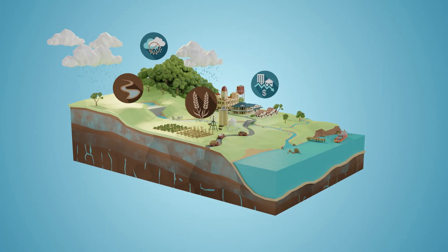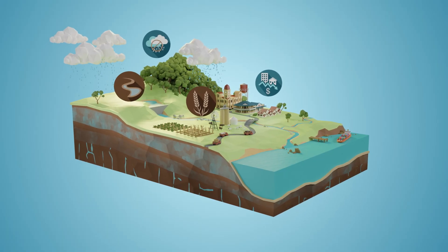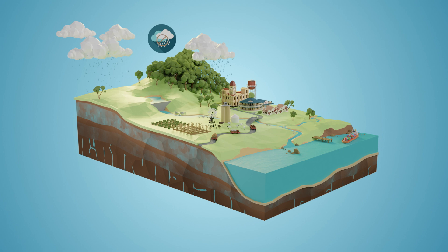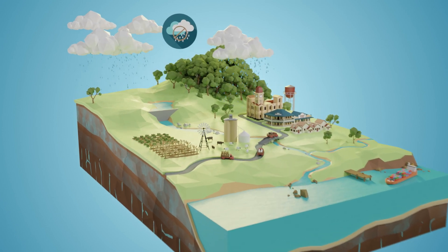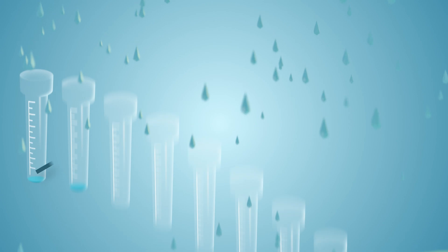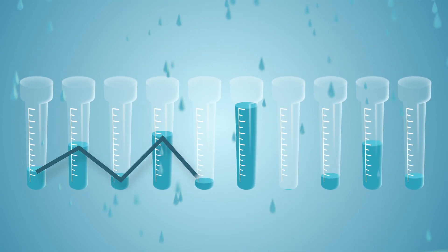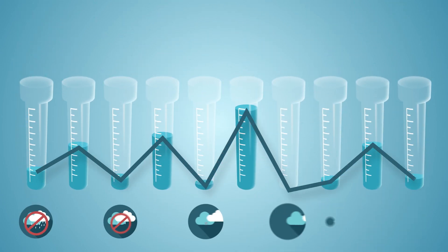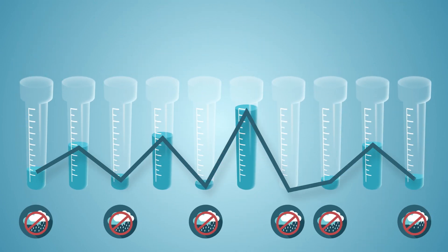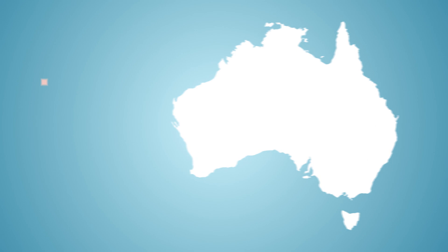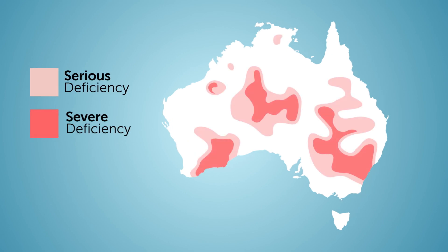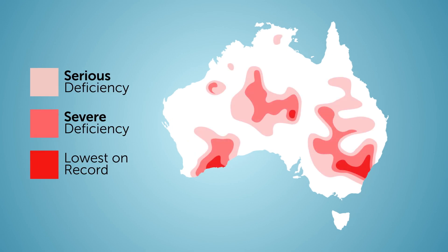There are several types of drought. Meteorological drought relates directly to less rain than usual. Australia's rainfall is highly variable. When somewhere receives less rain than usual, we say it has a rainfall deficiency. If there is much less rain than usual, we might talk of serious or even severe rainfall deficiencies.